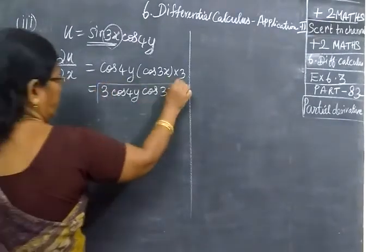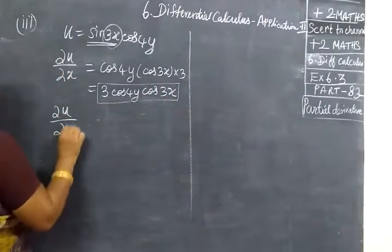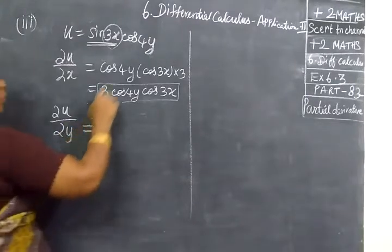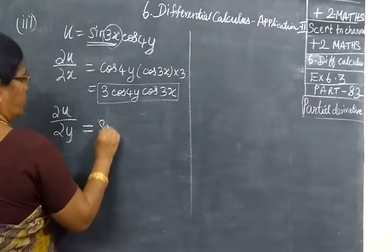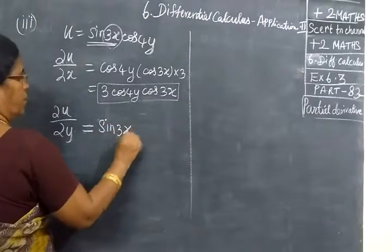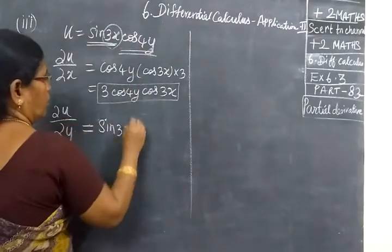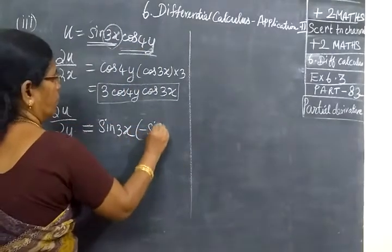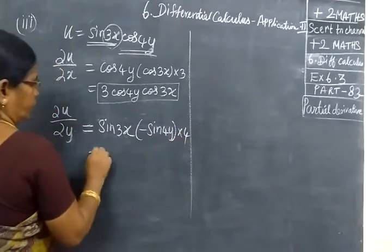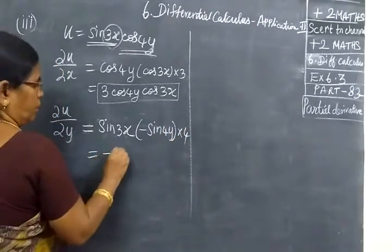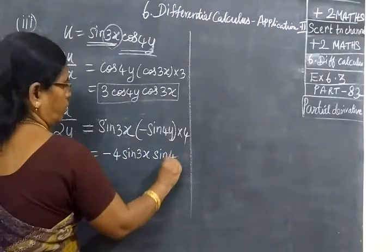Next we are finding ∂u/∂y. This is with respect to y. Sin(3s) has to be kept as is — we are differentiating with respect to y only. So either one to differentiate: cos becomes minus sin(4y) into 4, into the inner function.